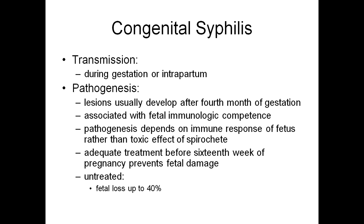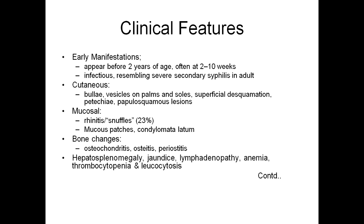Congenital syphilis is very rare; transmission is during gestation or intrapartum. Regarding pathogenesis: lesions usually develop after the fourth month of gestation, associated with fetal immunological competence. Pathogenesis depends on the immune response of the fetus rather than the toxic effects of the spirochete. Adequate treatment before the 16th week of pregnancy prevents any fetal damage, but if untreated, fetal loss may be up to 40%.